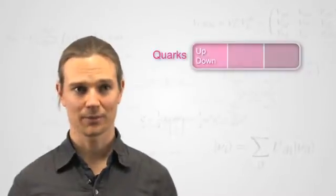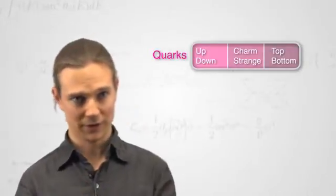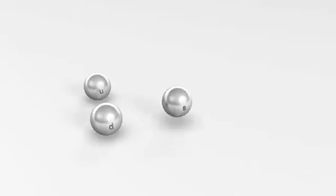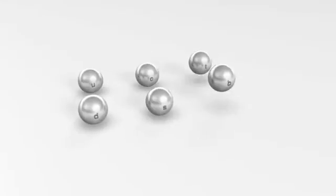At the beginning there were only three quarks. Then a fourth, fifth and sixth quark was predicted and then discovered. And this gave us great confidence in the model.